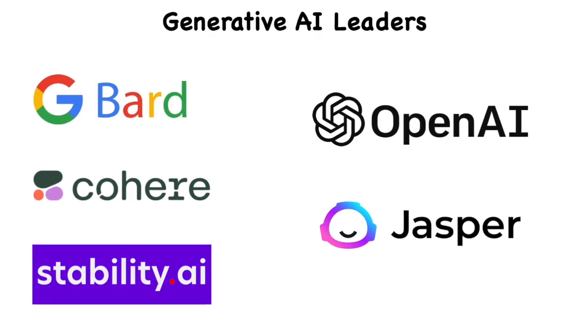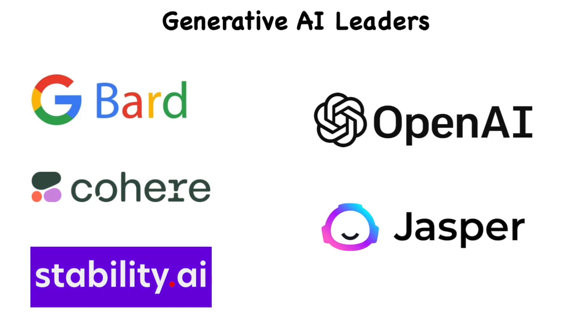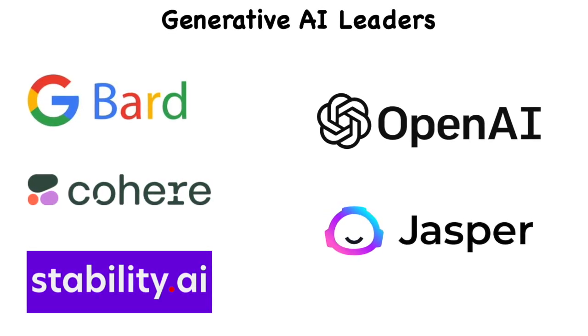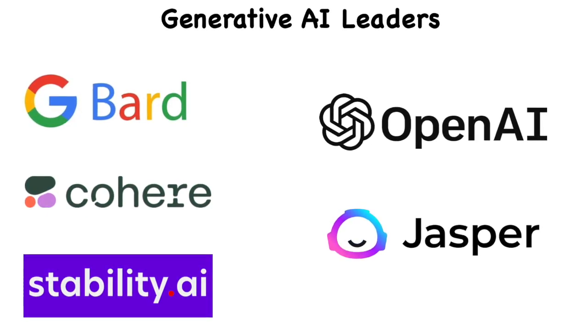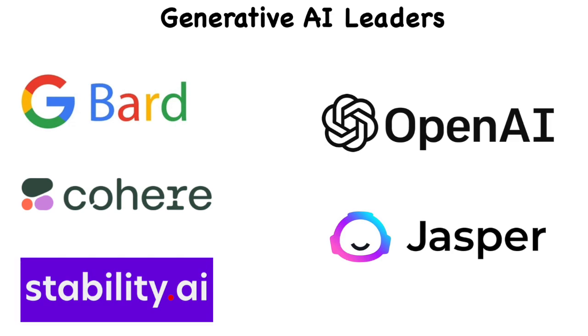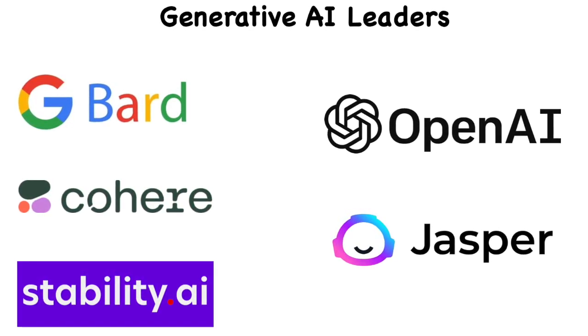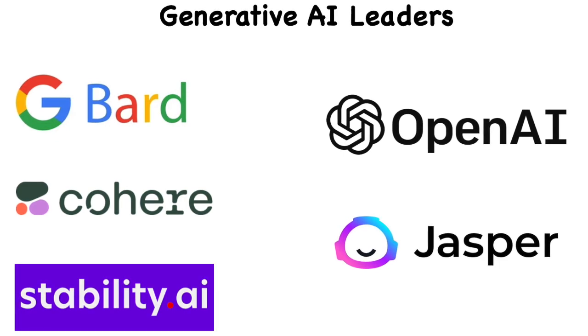You're familiar with OpenAI slash ChatGPT, which is amazing in itself. But some of the other leaders are Google Bard, which is still kind of in its infancy but is developing into a very impressive AI engine for generative AI. A company called Cohere, Stability AI, and Jasper are all very strong competitors in the generative AI space. There are a few other smaller ones still developing, but these are companies developing APIs for generative AI that you can integrate into your application.